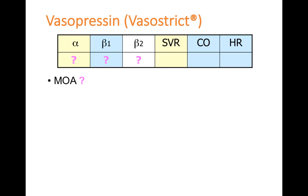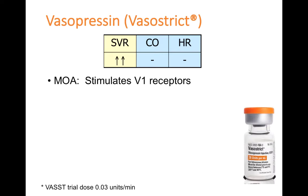Starting with vasopressin: its mechanism is nonadrenergic, so it doesn't work through alpha or beta receptors. Vasopressin works by stimulating V1 receptors, causing vasoconstriction in the vasculature. This translates hemodynamically to an increase in systemic vascular resistance (SVR). It doesn't have much effect on cardiac output or heart rate, so it's mostly a pure vasoconstrictor.